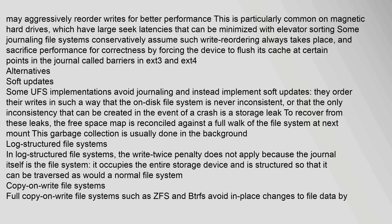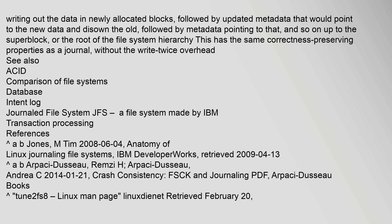In log-structured file systems, the write-twice penalty does not apply because the journal itself is the file system — it occupies the entire storage device and is structured so that it can be traversed as would a normal file system. Full copy-on-write file systems such as ZFS and btrfs avoid in-place changes to file data by writing out the data in newly allocated blocks, followed by updated metadata that would point to the new data and disown the old, followed by metadata pointing to that and so on up to the superblock or the root of the file system hierarchy. This has the same correctness-preserving properties as a journal without the write-twice overhead.